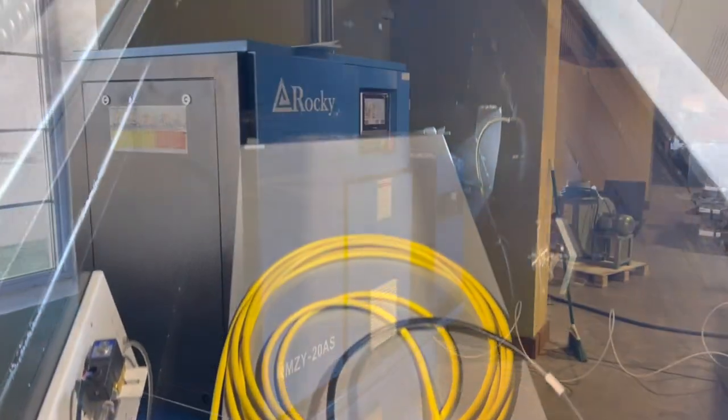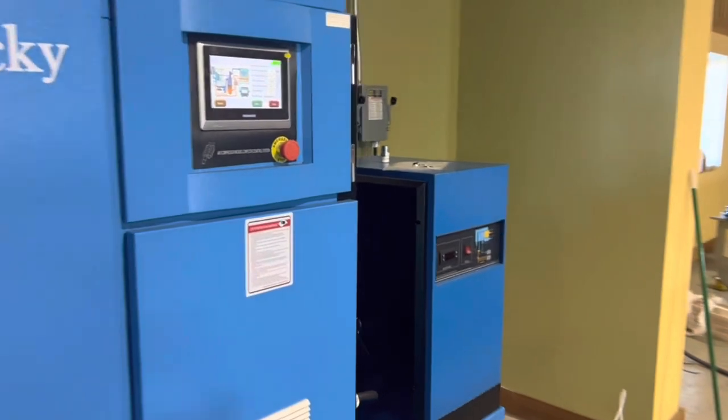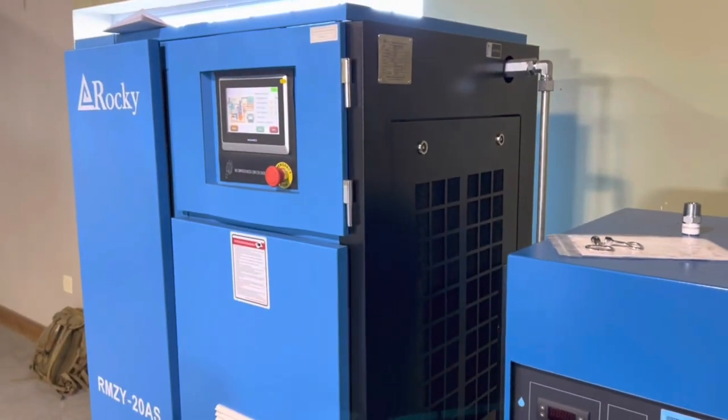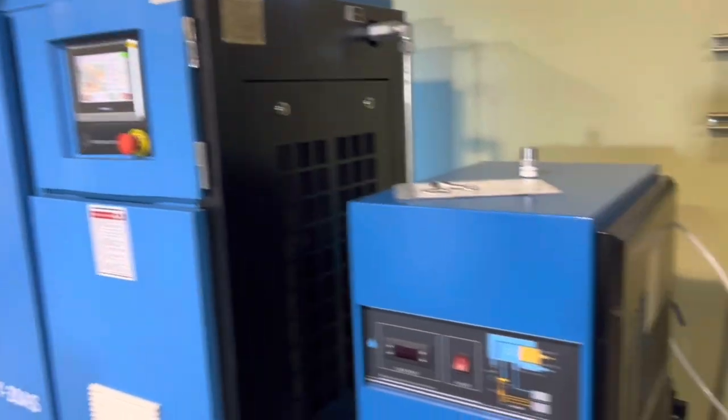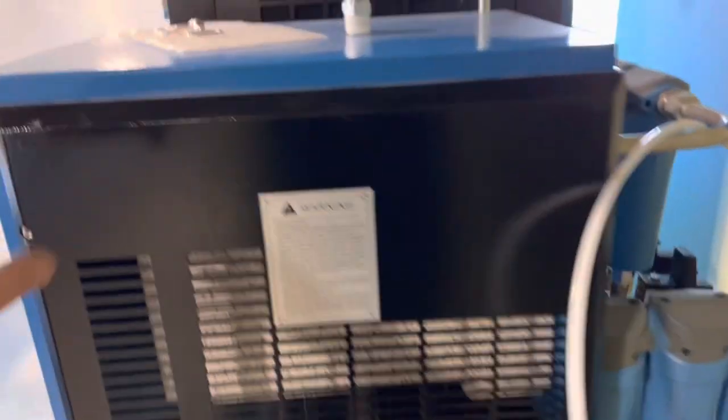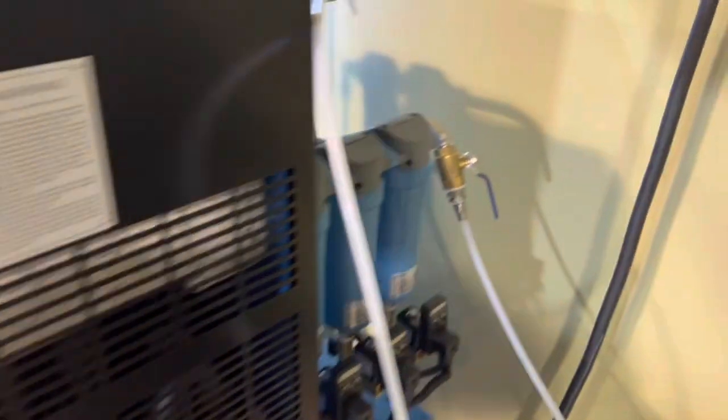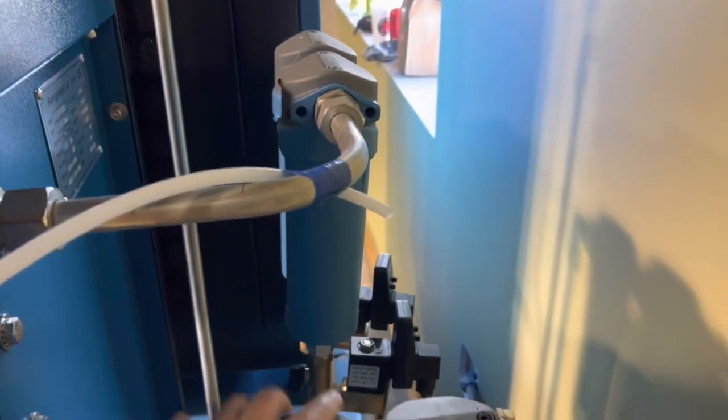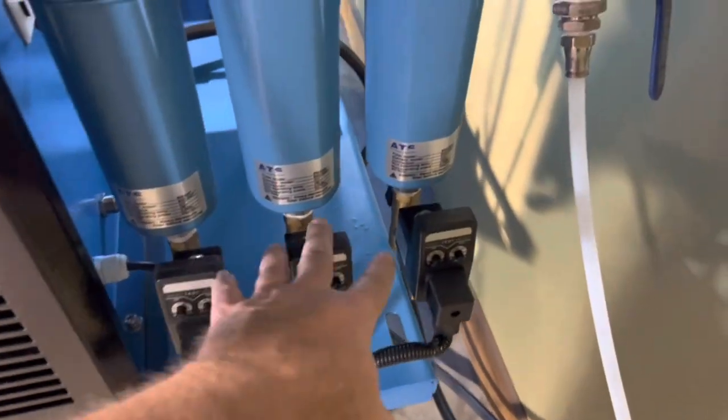I thought I'd give a little extended, more detailed look at the Rocky 20 bar air compressor. So 20 bar is 290 PSI, and you can see we got a built-in refrigerated dryer, five stages of external filtering, and then drain valves on all the external filters.